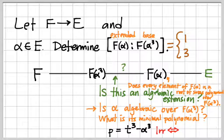So, this is irreducible if and only if it has no roots in F adjoin alpha cubed.